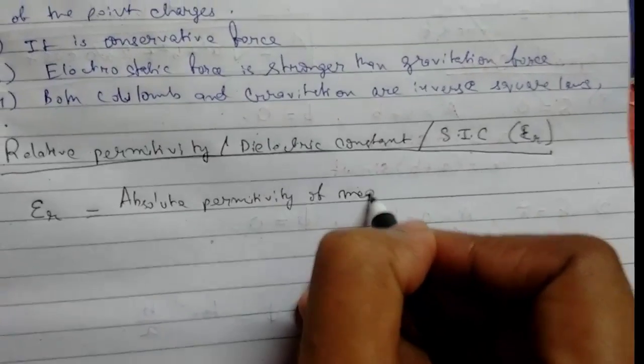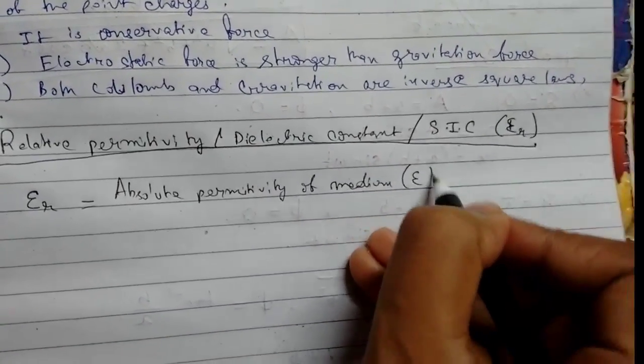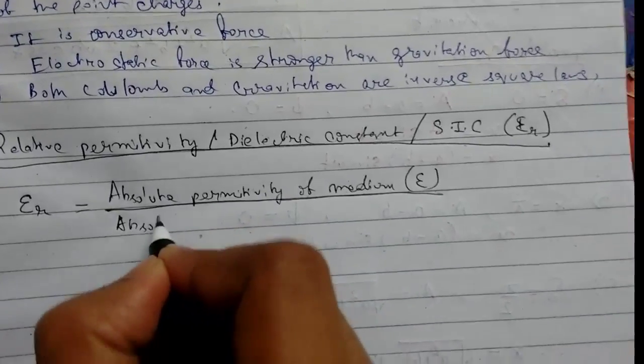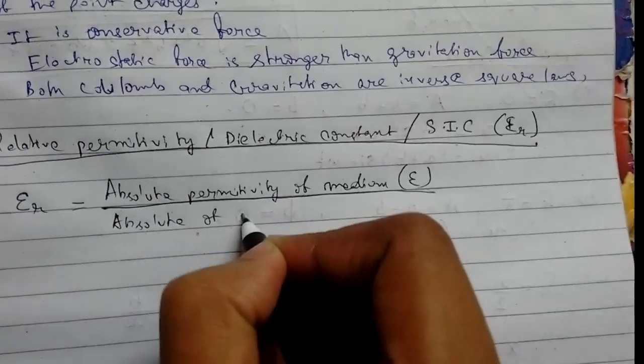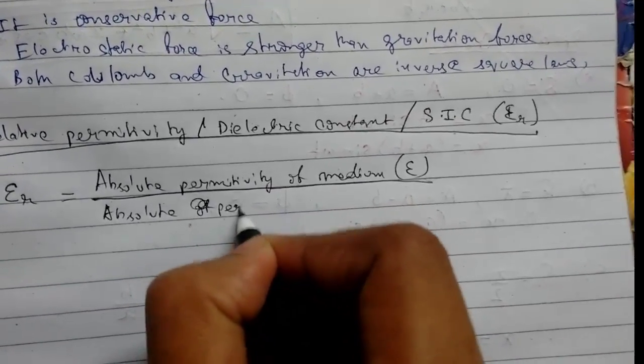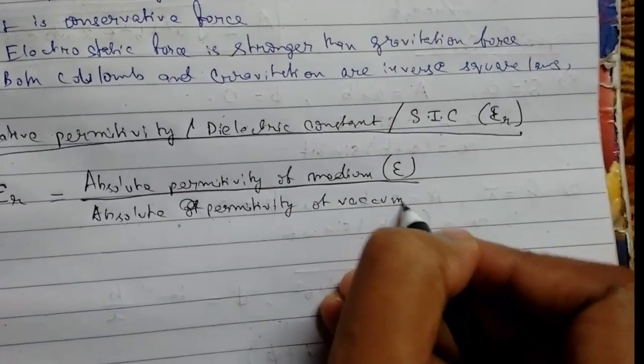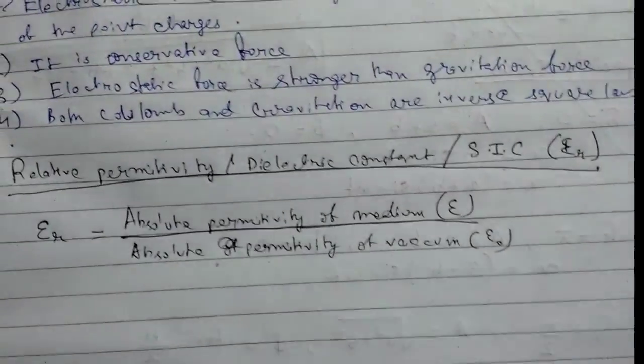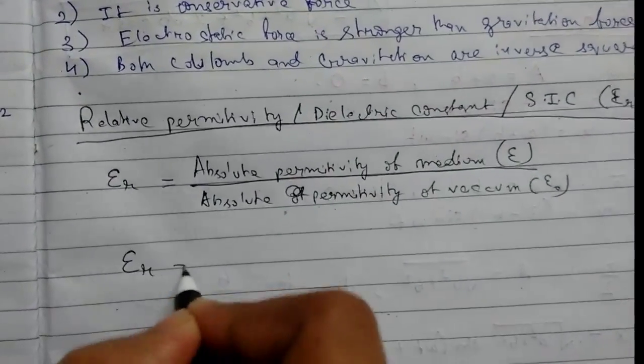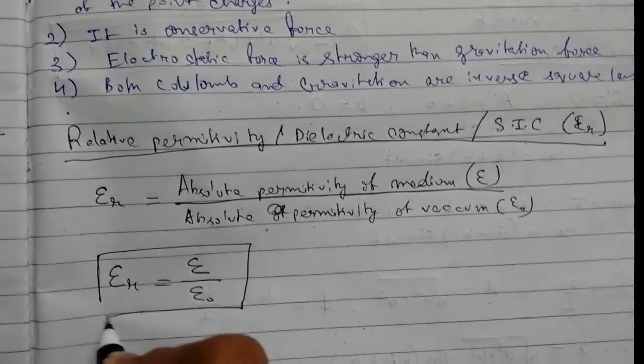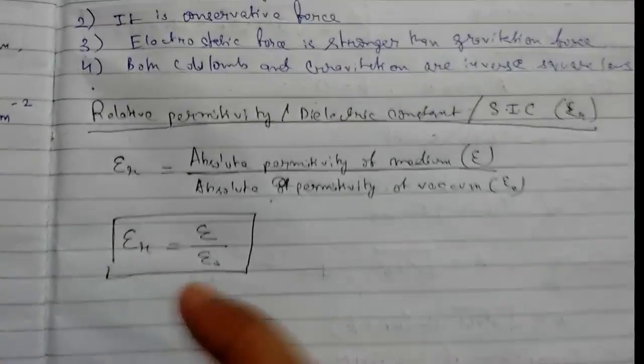Relative permittivity is defined as the absolute permittivity of the medium, epsilon, upon the absolute permittivity of vacuum, epsilon naught. So epsilon R equals epsilon upon epsilon naught.